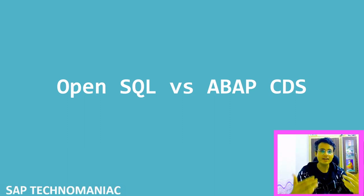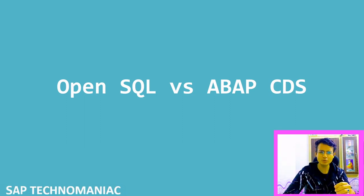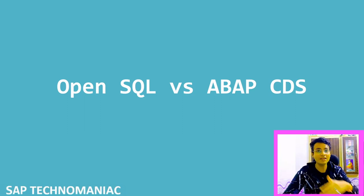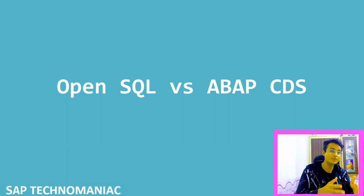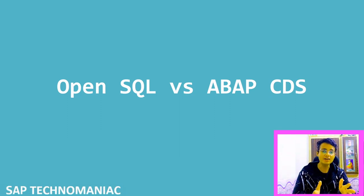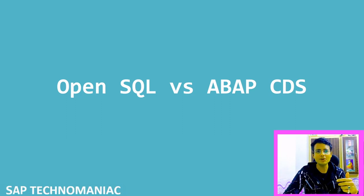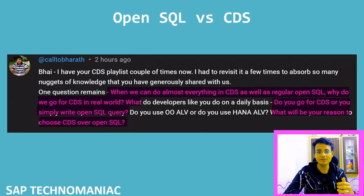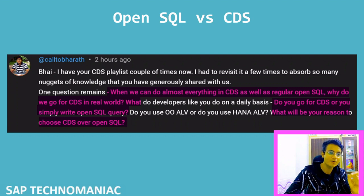When we work in day-to-day programming, some things we can achieve using OpenSQL as well as CDS. Should I have to create CDS for each and everything, or can I use normal SQL as well? In my ABAP on HANA course, we discussed OpenSQL enhancements and different kinds of CDS available. But we saw that a lot of things achievable through OpenSQL can also be achieved through ABAP CDS.